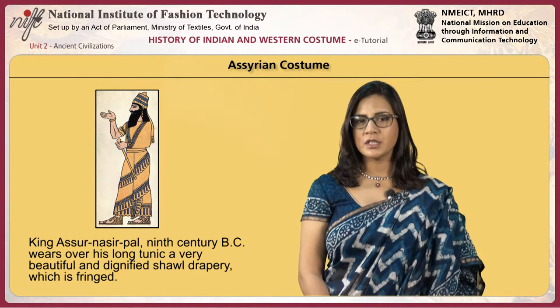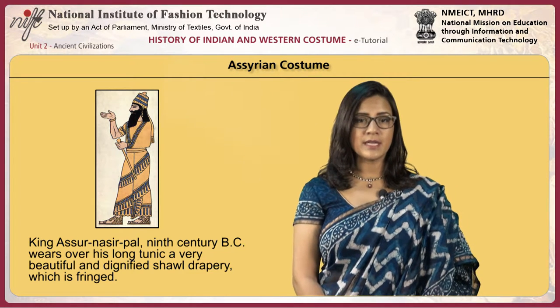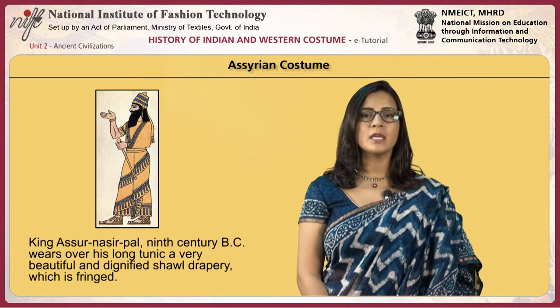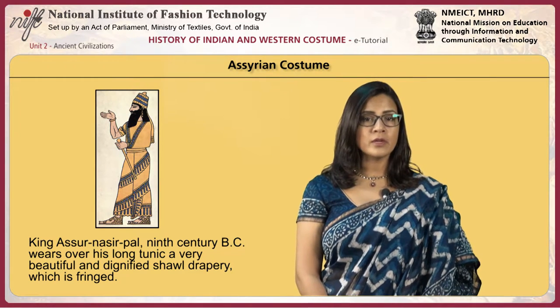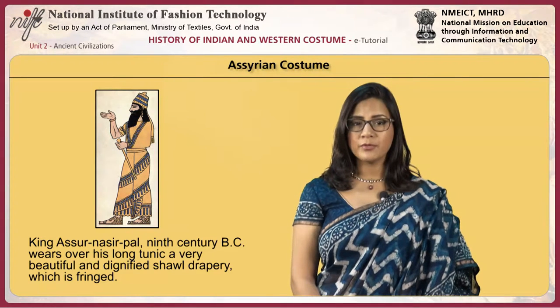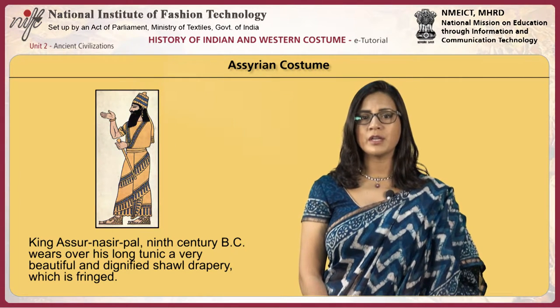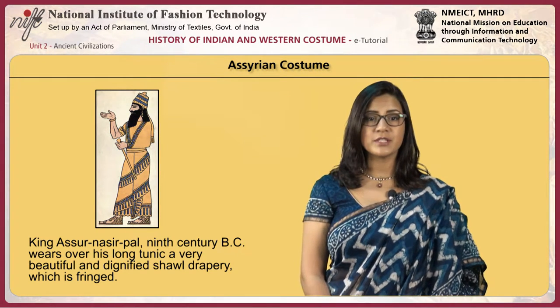In this picture, King Assur Nasirpal, 9th century BC, wears over his long tunic a very beautiful and dignified shawl drapery, which is fringed.